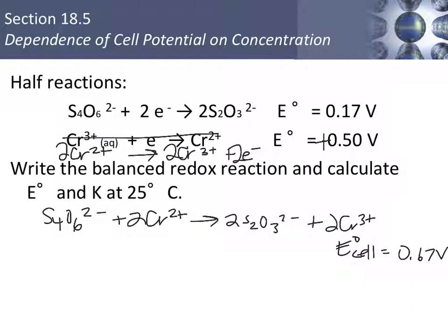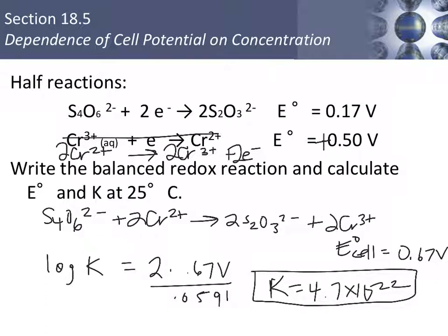Now, using that number, we can calculate K, the equilibrium constant. Log of K equals 2 for 2 moles of electrons times 0.67 volts divided by 0.0591. And when solved, K equals 4.7 times 10 to the 22nd, a very product-favored reaction. There is another way to solve this problem using this series of equations that utilizes delta G.